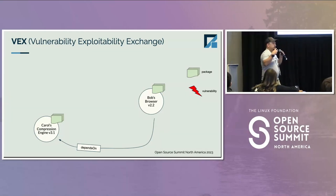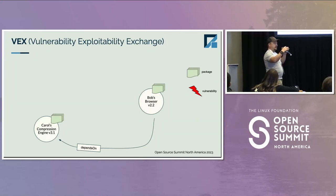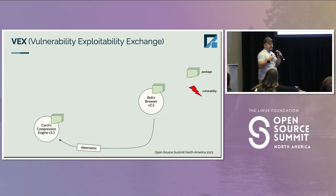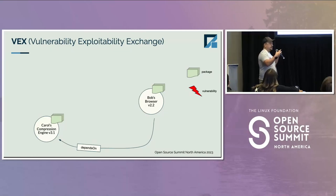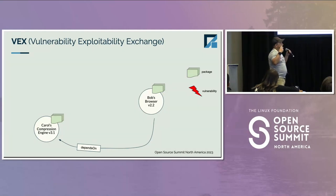On top of that, you have the security information. You have a vulnerability, and when that's released it has a set cadence — it should also not change. But the assessments of those vulnerabilities start to change. More information gets known, more people are looking at it and issuing opinions on that vulnerability, and then it starts to change. The same is true for the impact of the vulnerability with a given piece of software.